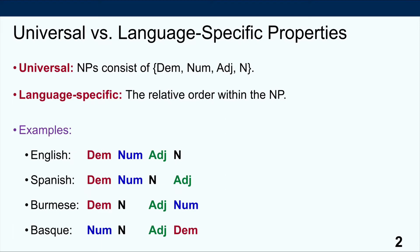For example, in English we have demonstrative, numeral, adjective, noun — so we would say 'Those three green apples.' In Spanish we have demonstrative, numeral, noun, adjective — so we would say something like 'Those three apples green.' In Burmese we have demonstrative, noun, adjective, numeral — so something like 'Those apple green three.' And in Basque we have numeral, noun, adjective, demonstrative — so 'Three apples green those.' So we need to account for these universal aspects on the one hand, but our account must also be flexible enough to account for all these various orderings across different languages.